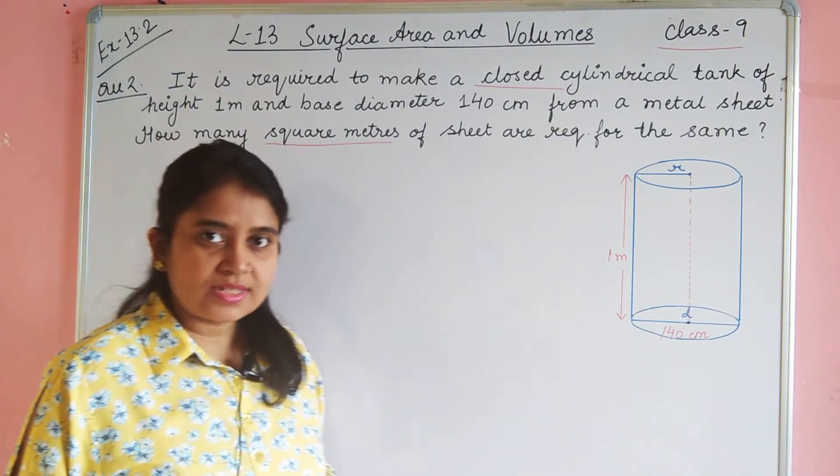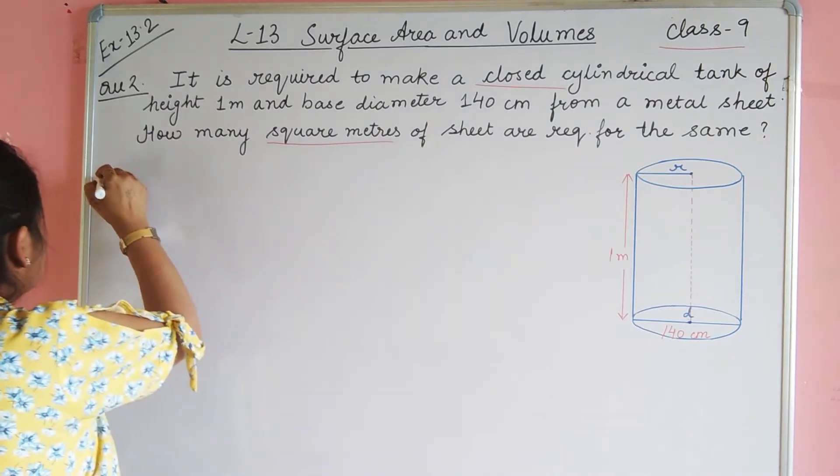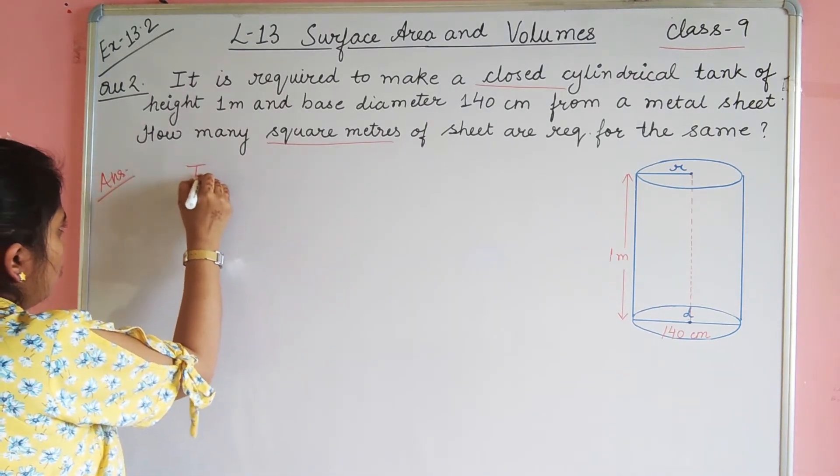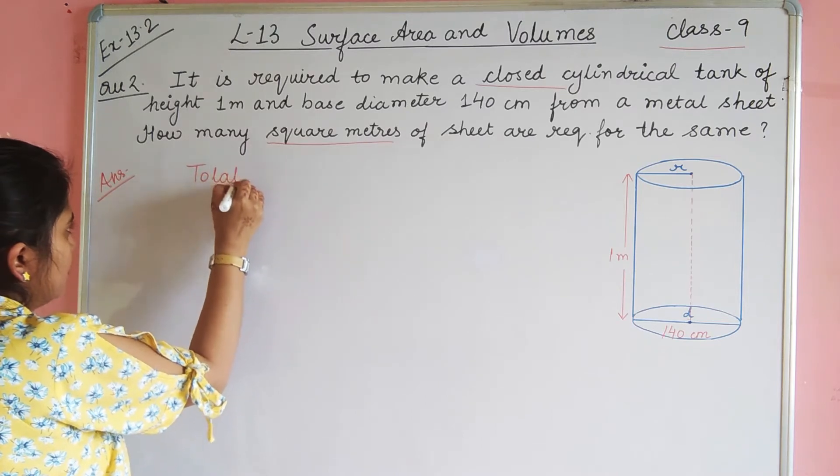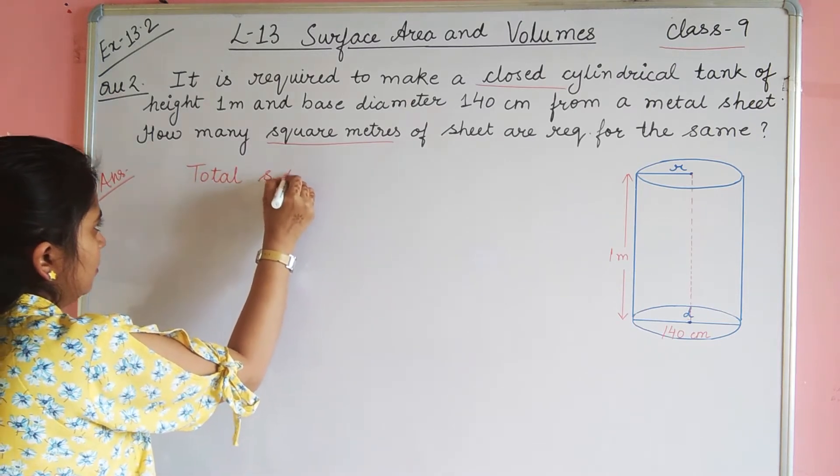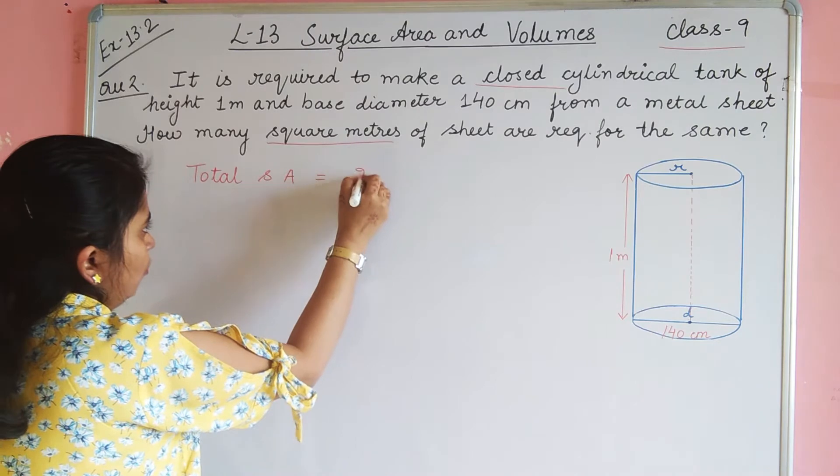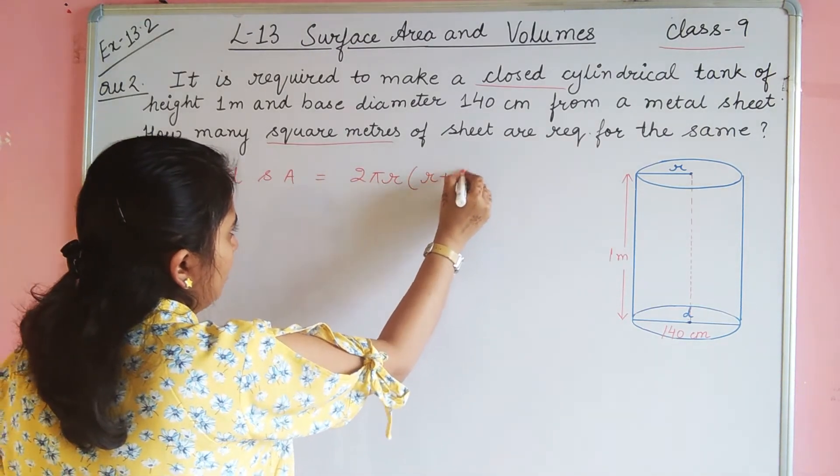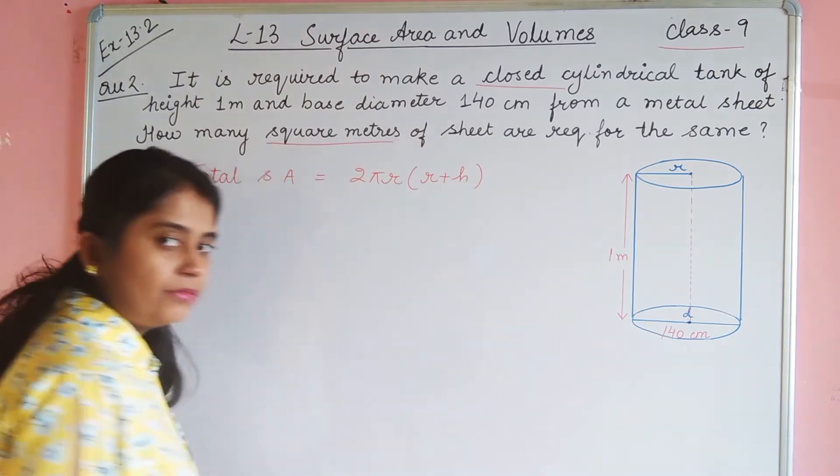So, total surface area of a cylinder. The formula is 2πr(r + h). Values.